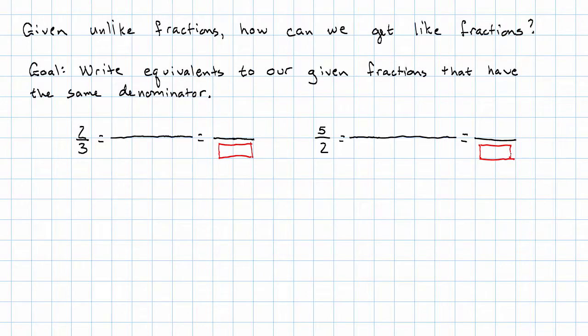Recalling that the way we get equivalent fractions is to multiply the numerator and denominator by the same thing, we need to find a number to write in the red box that's equal to 3 times something and also to 2 times something.